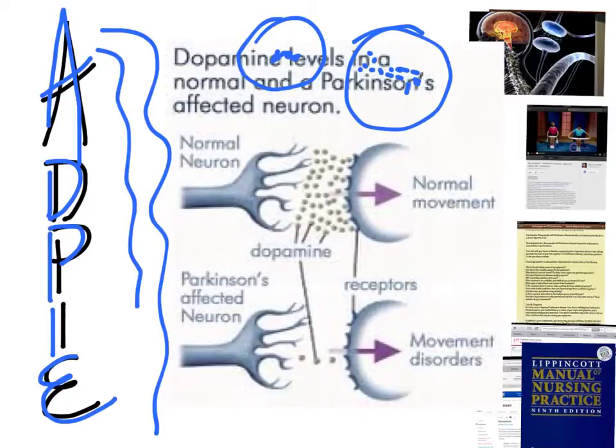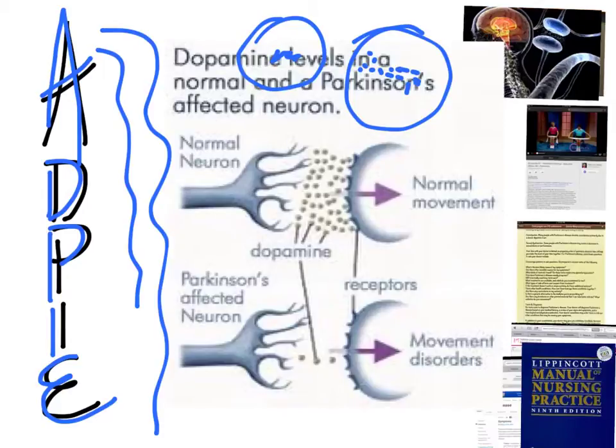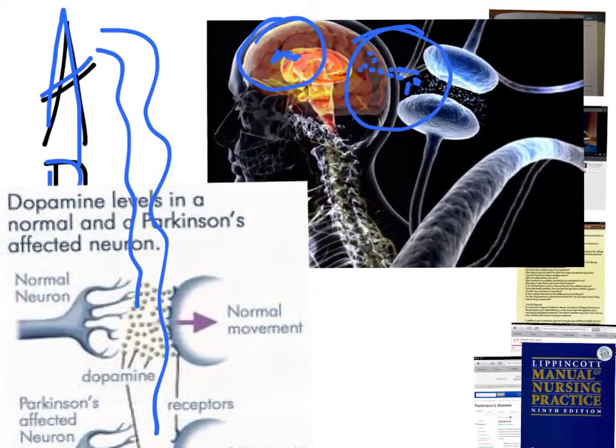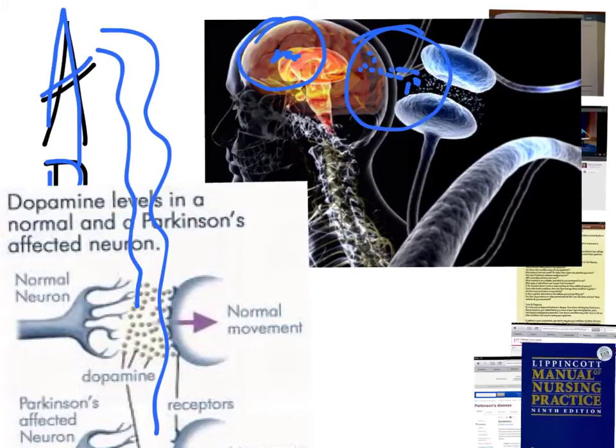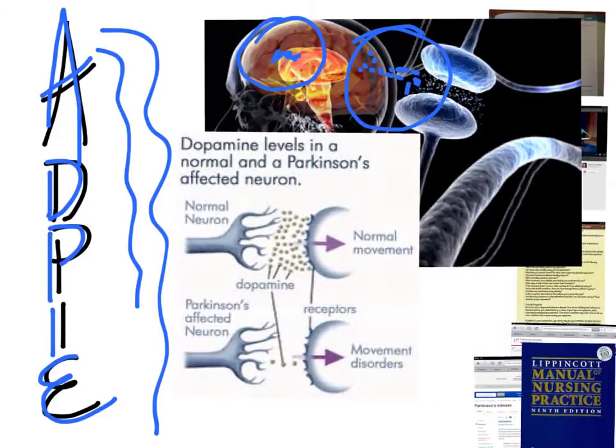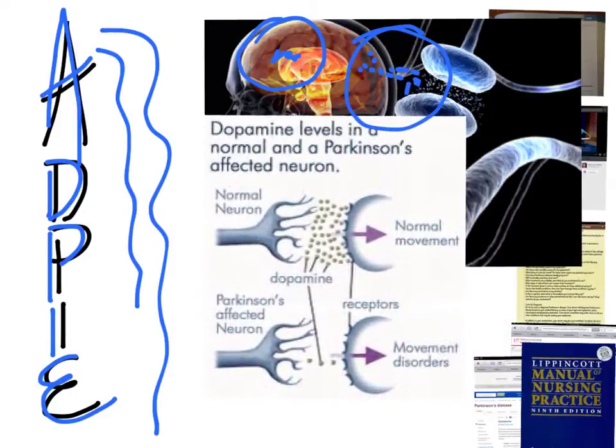Parkinson's affects the neurological areas of the brain that are responsible for motor movement. It's thought to have been caused by several things. It could be genetic predisposition. It could also be caused by chemicals such as pesticides or herbicides. The end result is that there is a reduction in the dopamine, and that is responsible for muscle movement or normal muscle movement.